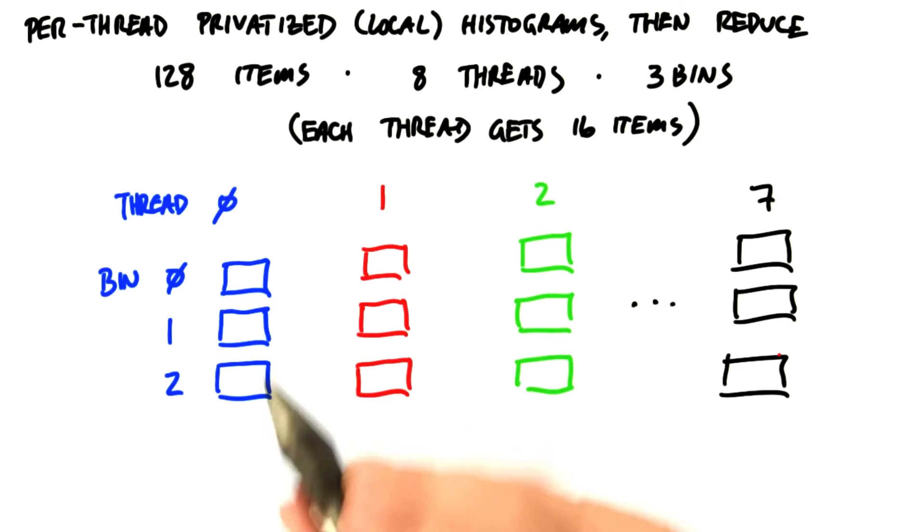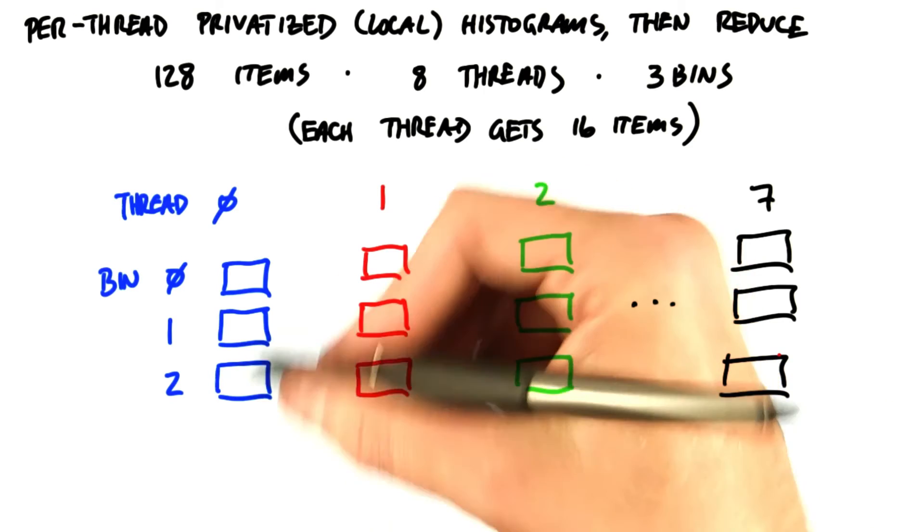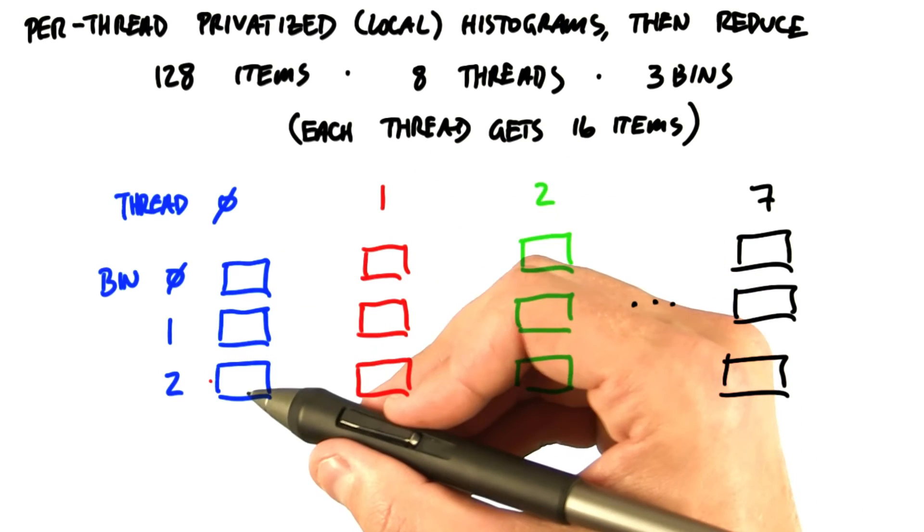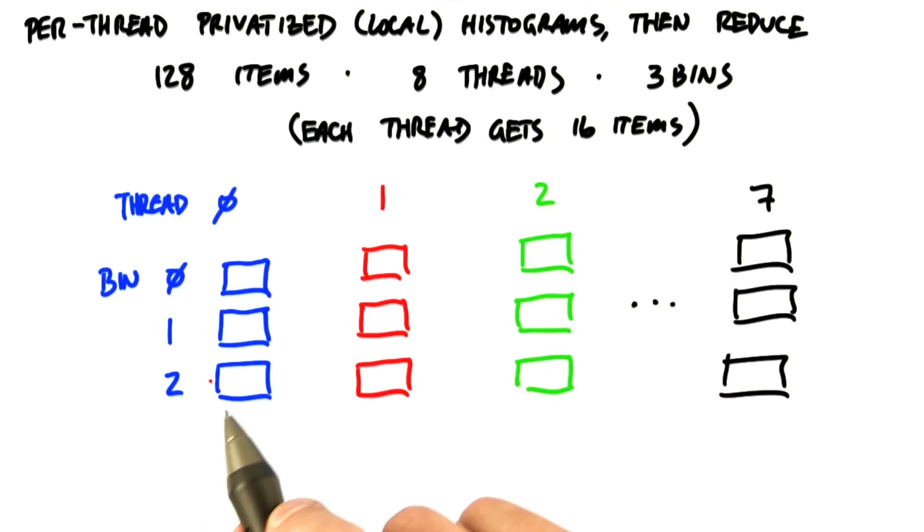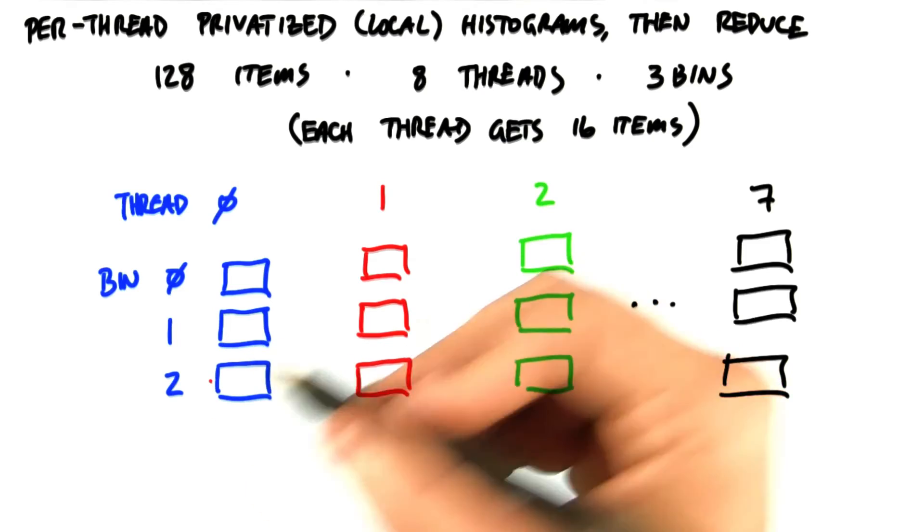Rather than have only one single set of 3 bins in memory, let's launch 8 threads and give every thread its own set of bins, which we'll call its local histogram. Since we don't have very many bins, we can store each thread's bins in that thread's registers, which are fast.